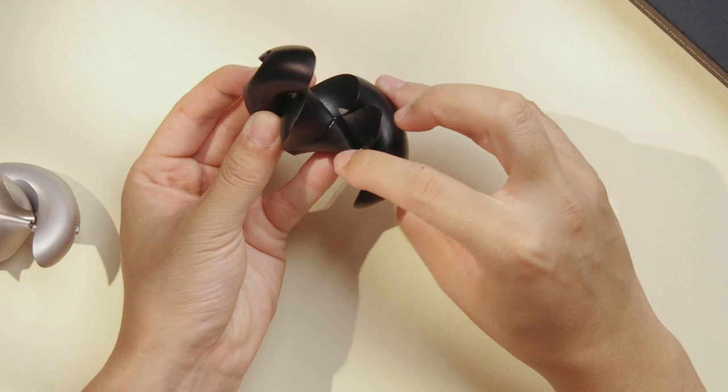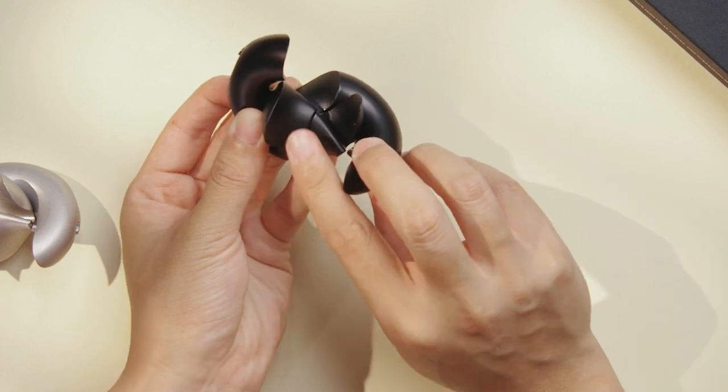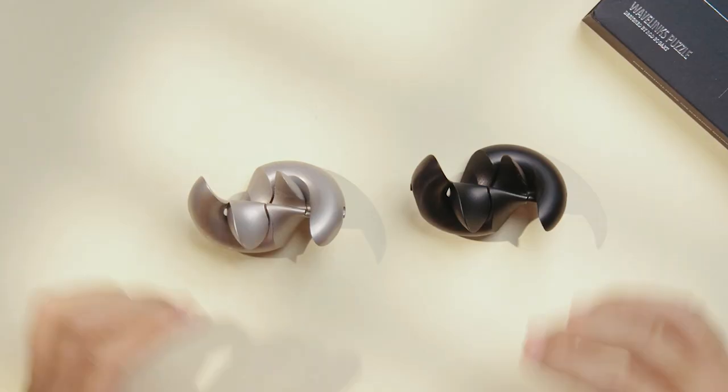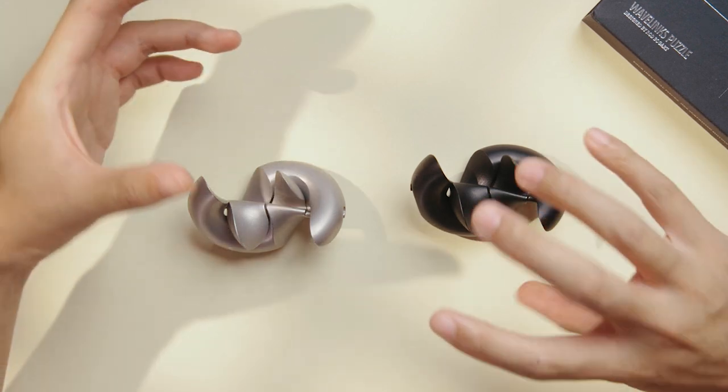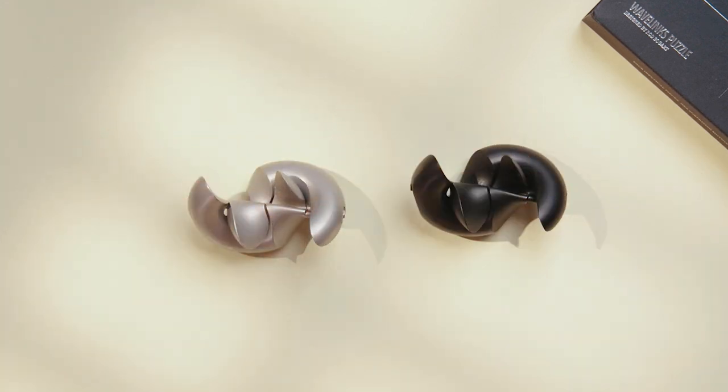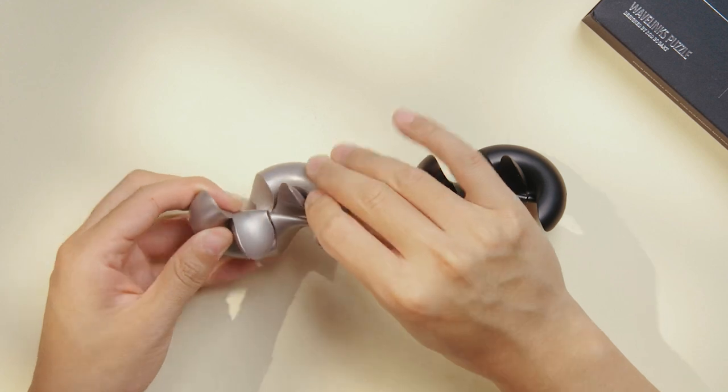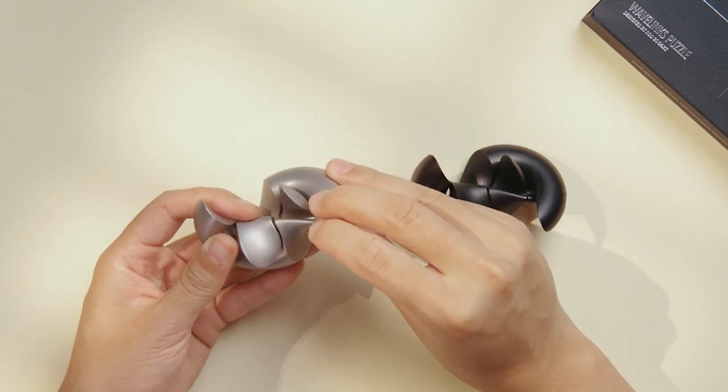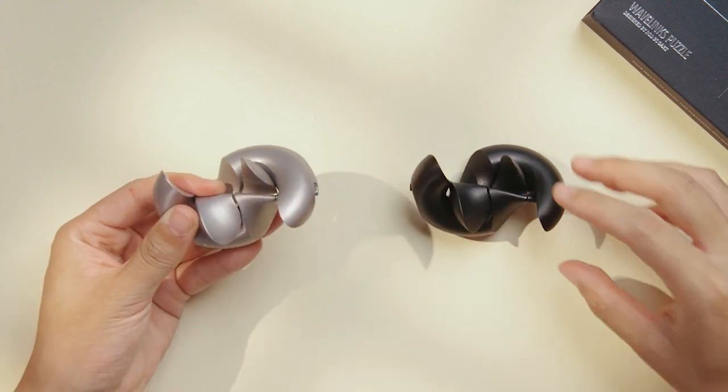So again, keep the stems in line and this part is a nice smooth connection. Now to connect the pieces, what's essentially going to happen is they're going to rotate into each other at the same time.